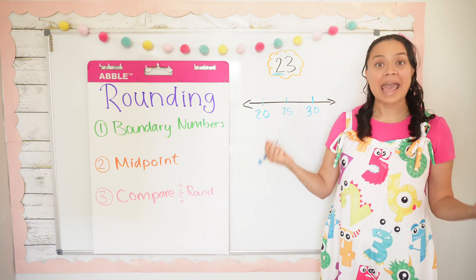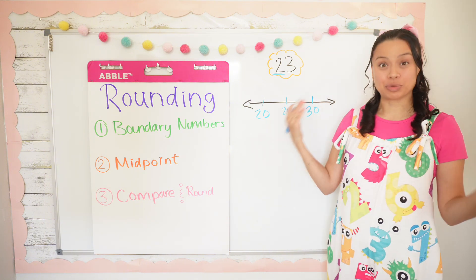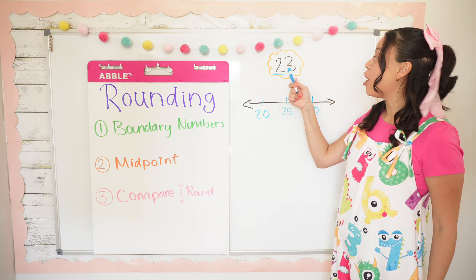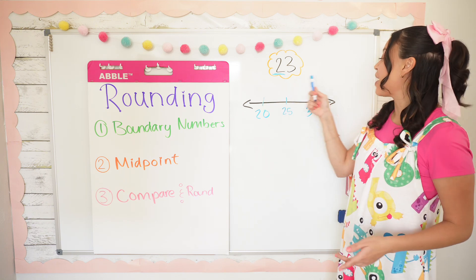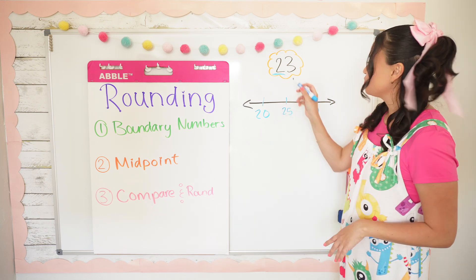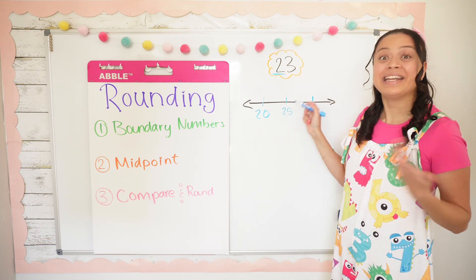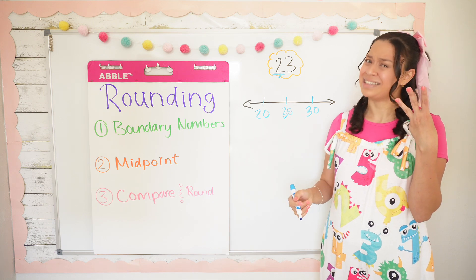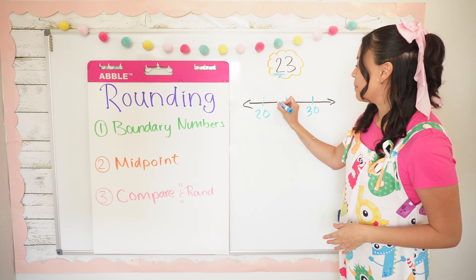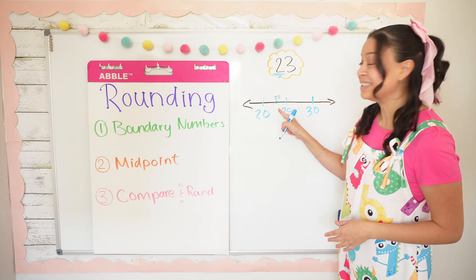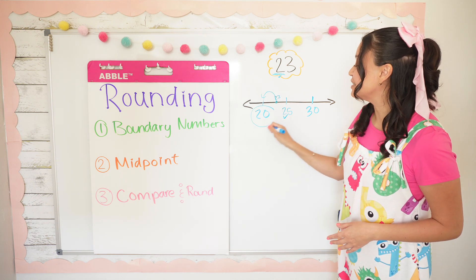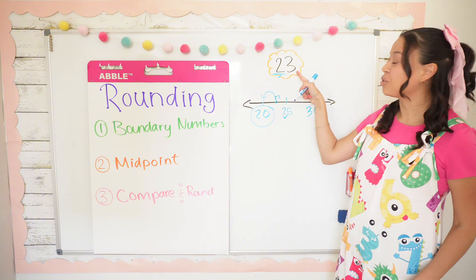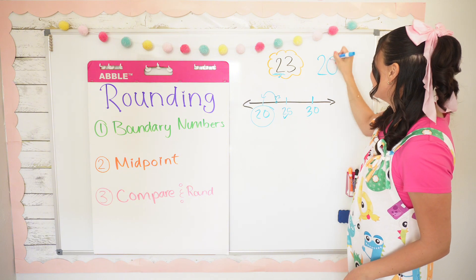The last step is to compare our number with the midpoint and round. If our number is less than the midpoint, we're going to round down to 20. But if our number is greater than or equal to the midpoint, we're going to round up to 30. Is two tens and two tens equivalent? Yes. What about three ones and five ones? No — three ones is less than five ones. So I'm going to plot the number 23 on my number line because it's less than the midpoint. Because it's less than the midpoint, we're going to round down, since 23 is way closer to 20 than it is to 30. So 23 rounded to the nearest 10 is 20.